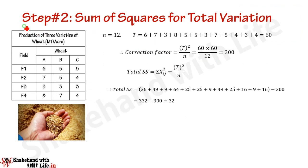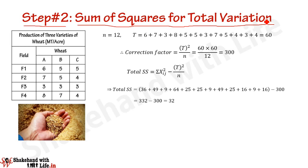In step 2, we calculate the sum of squares for total variation. This time we use the correction factor in place of the mean value, and subtract the correction factor from the sum of squares of each element. We have 12 elements in total, so n = 12.